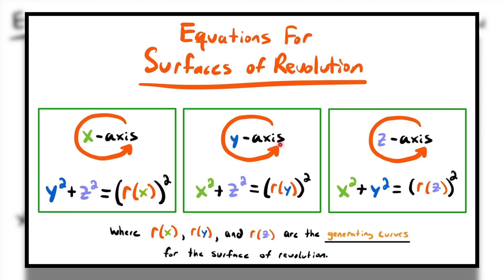If your curve is revolving around the y-axis, then your radius function needs to be in terms of y. You would square that radius function and it would be equal to the sum of the other two variables squared. And if you're revolving around the z-axis, you want your radius function or generating curve to be in terms of z, so r of z squared equals the sum of the other two variables squared. Remember that r of x, r of y, and r of z are the radius functions or the generating curves for the surface of revolution.